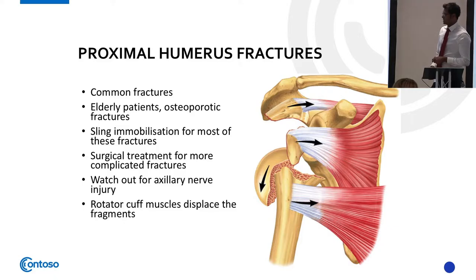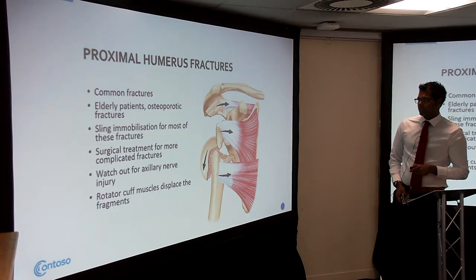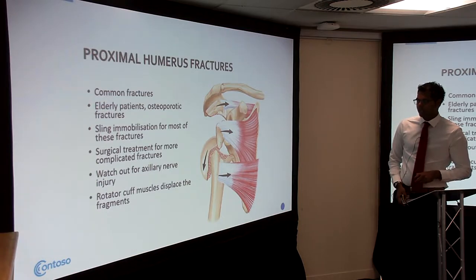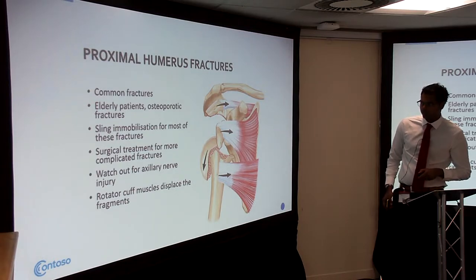Here's an overview: the supraspinatus tendon attaches onto the greater tuberosity, infraspinatus onto the lesser tuberosity, and latissimus dorsi onto the humeral shaft. The head has essentially fallen off — like an ice cream falling off the cone. We normally put these patients in a sling for most of these fractures.